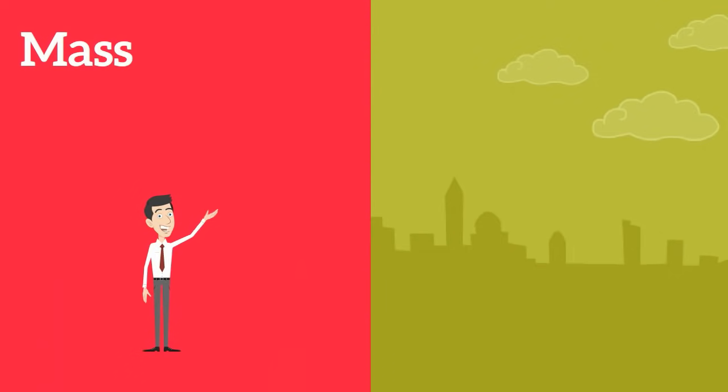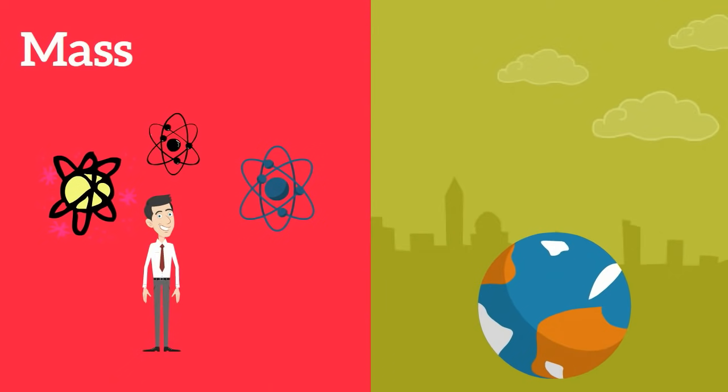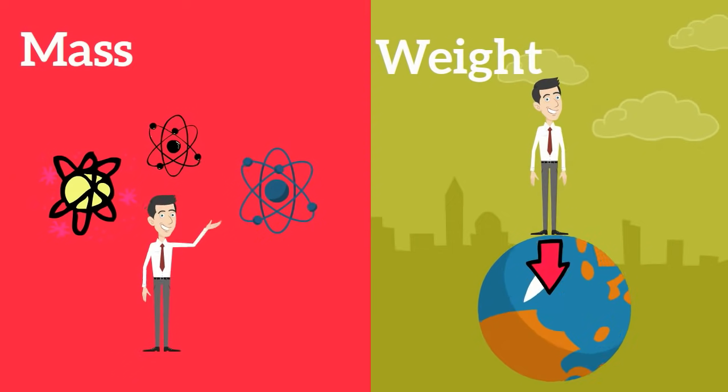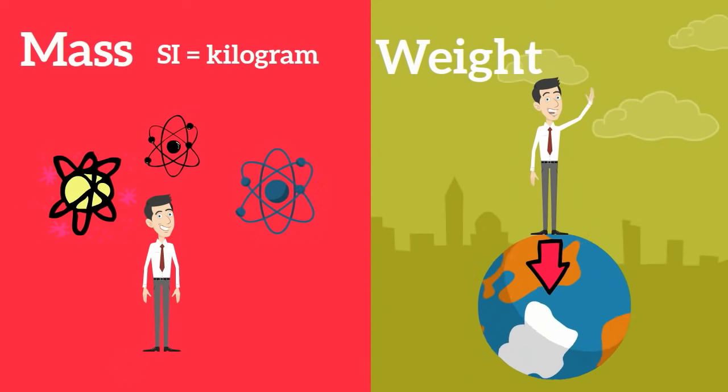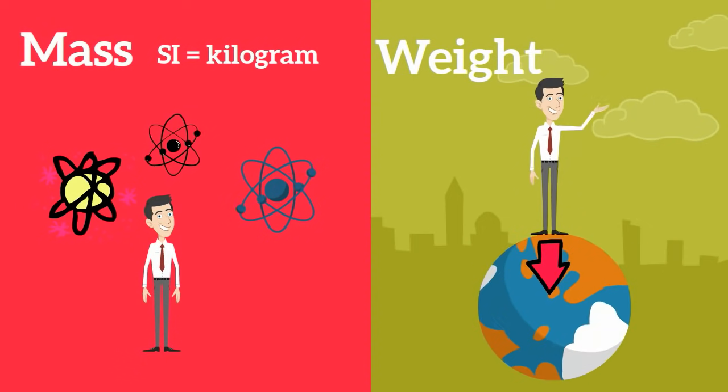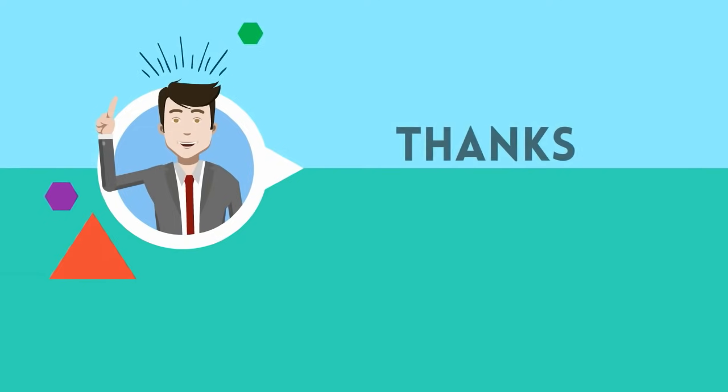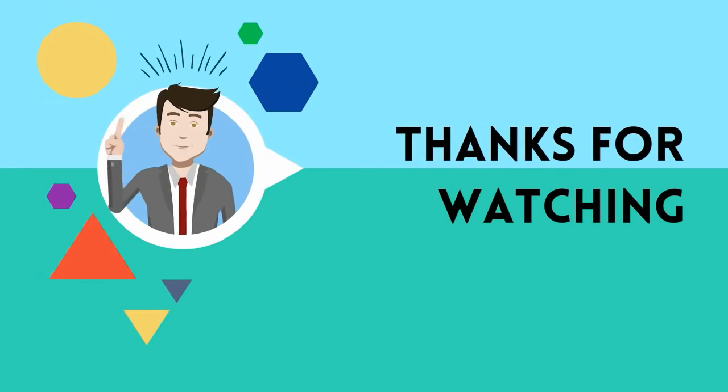So in conclusion, mass is a measure of how much matter something contains, and weight is a measure of how strongly gravity pulls on the same object. The SI unit for mass is kilograms. The SI unit for force is newtons.